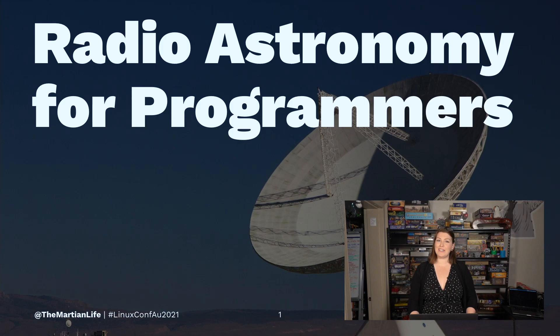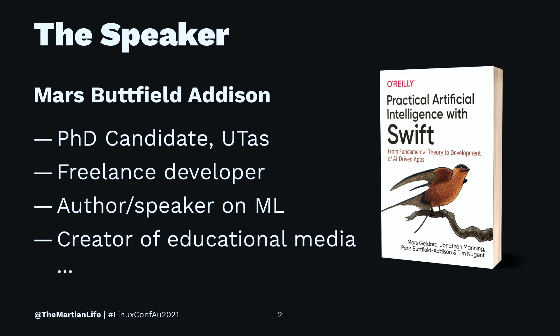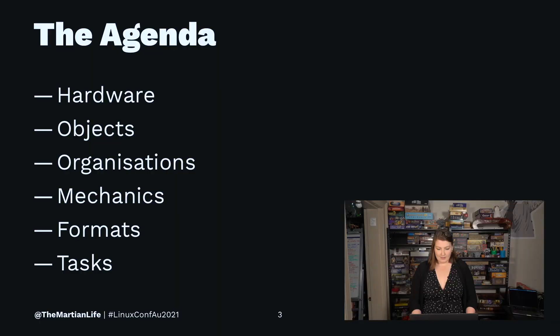Welcome to Radio Astronomy for Programmers. I'm Myles Botfield-Adison, a PhD candidate at the University of Tasmania working on space situational awareness — tracking junk in space with machine learning. Today I'll be speaking about the basics of six different components of radio astronomy: starting with the hardware, the objects you might track in space, the organizations involved, some basic mechanics you'll need, and the data formats to do some fun stuff at the end.